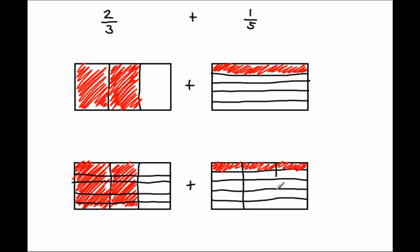Basically, all we're doing is taking the horizontal lines from the second diagram and overlaying them on top of the vertical lines in the first diagram, then taking the vertical lines from the first fraction and overlaying them in the second fraction as well. Now, how many equal pieces does it take to make a whole? We have 3 columns times 5 rows — 3 times 5 is 15 equal pieces.